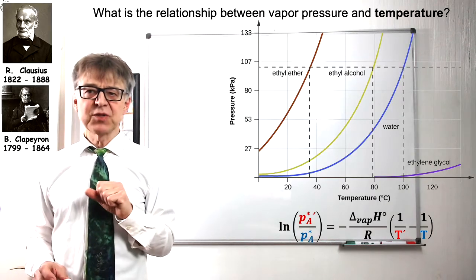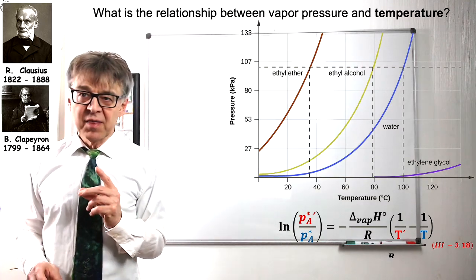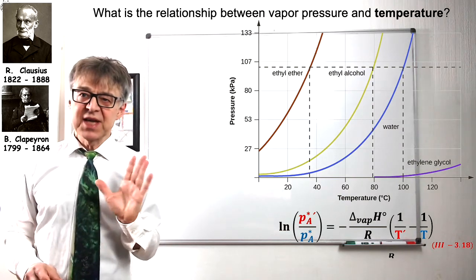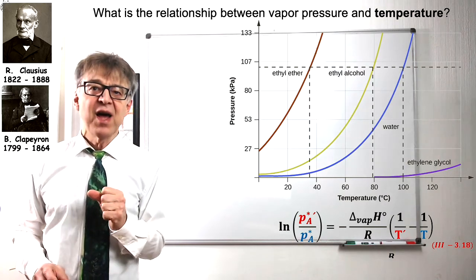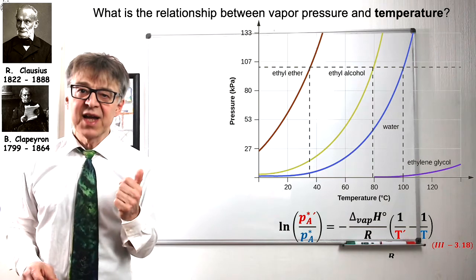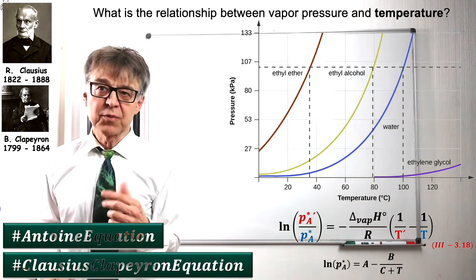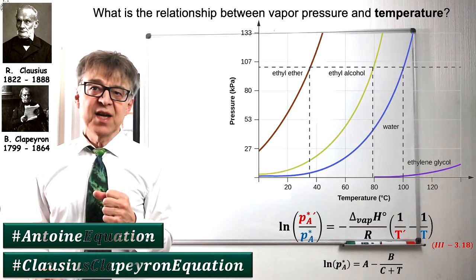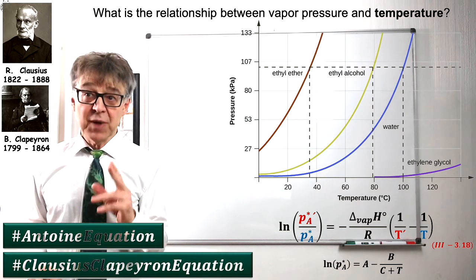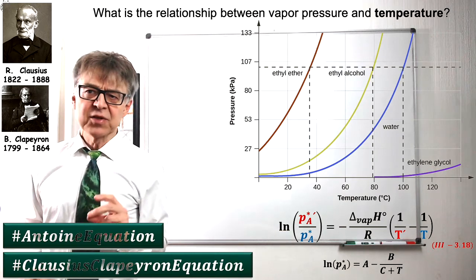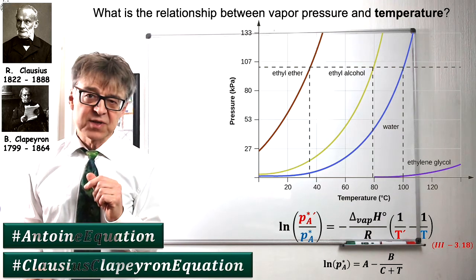There have been many attempts to describe the vapor pressure curve mathematically. In the equation named after them, Clausius and Clapeyron derived the relation between two points on the vapor pressure curve and the enthalpy of vaporization ΔH_vap. The Antoine equation, which uses three empirical Antoine vectors A, B, and C, is even more popular for the calculation of vapor pressures. It gives very precise results for vapor pressures but does not have as nice a thermodynamical background as the equation of Clausius and Clapeyron.